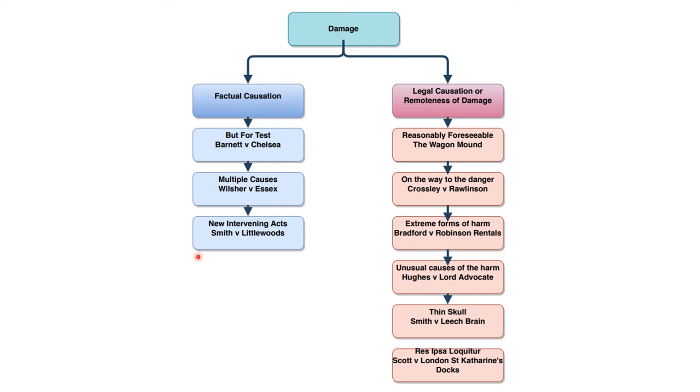We also may have an issue with a novus actus interveniens or a new intervening act. Where there is a new intervening act between the defendant's negligent act and the consequence, this may break the chain of causation, removing liability from the defendant. The legal test applicable will depend upon whether the new act was that of a third party or the act of a claimant, and you can use the case of Smith v Littlewoods on that.